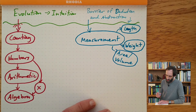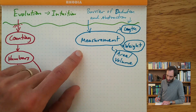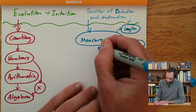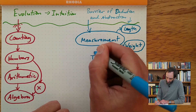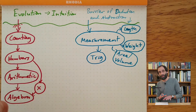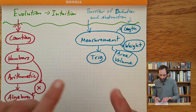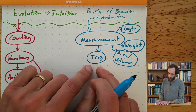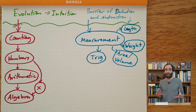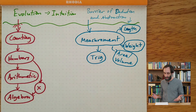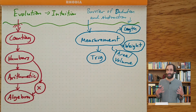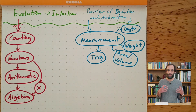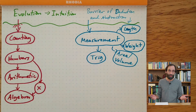One more thing I'll mention about measurement: our first unit in this course will be on measurement, and one of the things we'll cover is trigonometry. You may not know what trigonometry is yet, but here's how I want you to think of it: trigonometry is just a set of tools that help us measure things. They help us measure triangles, and we can use triangles to construct all sorts of different things. So trigonometry is really just about measurement.